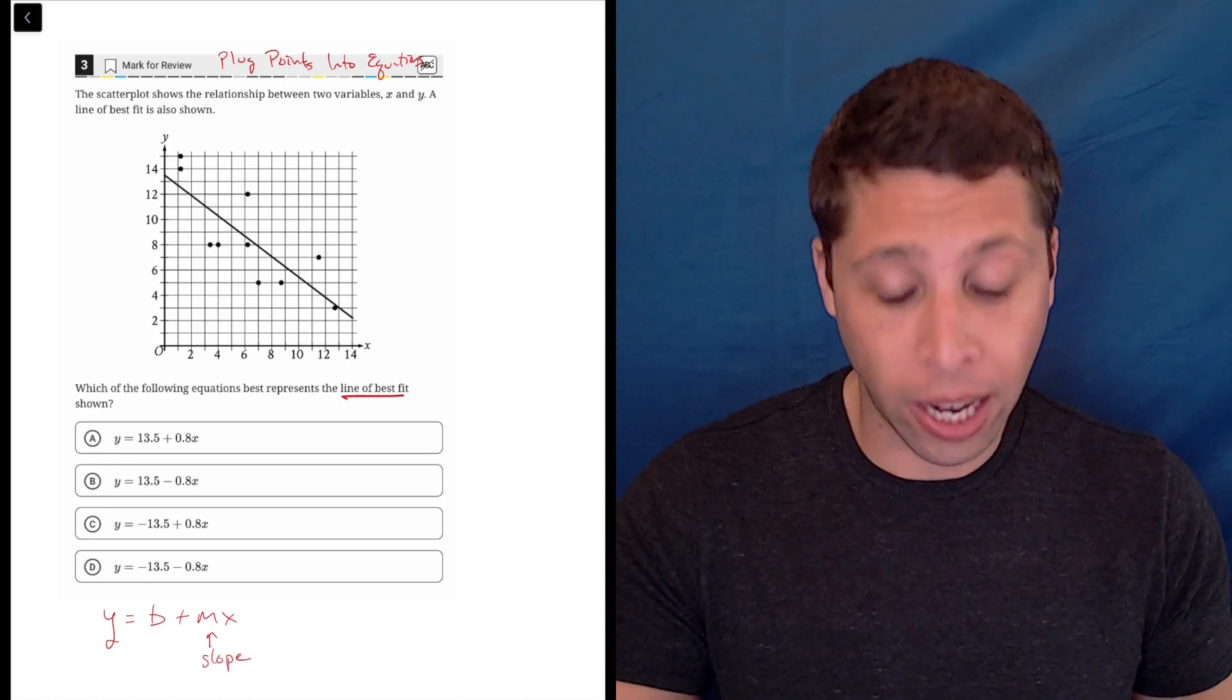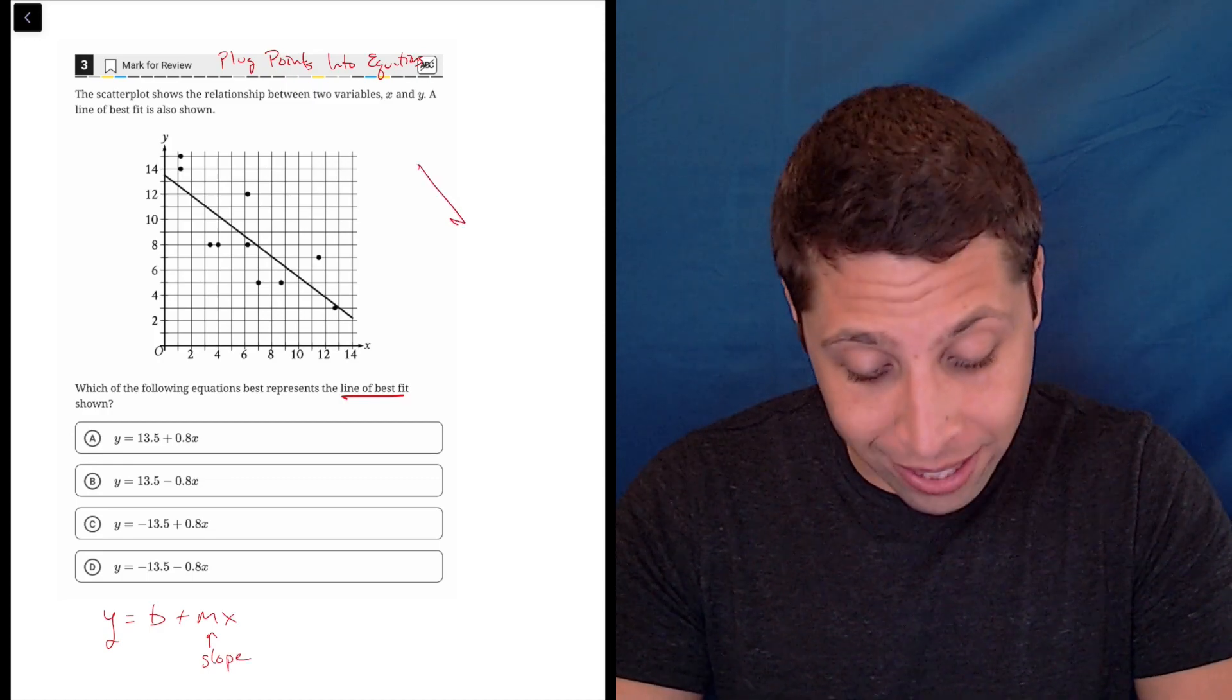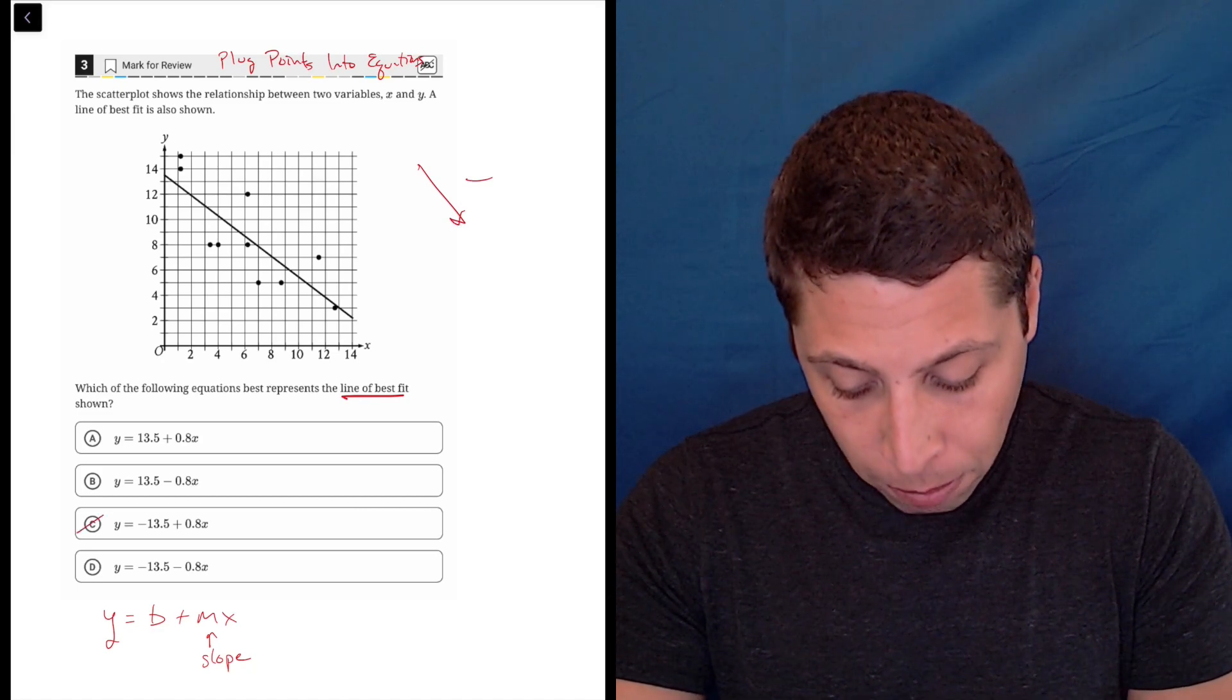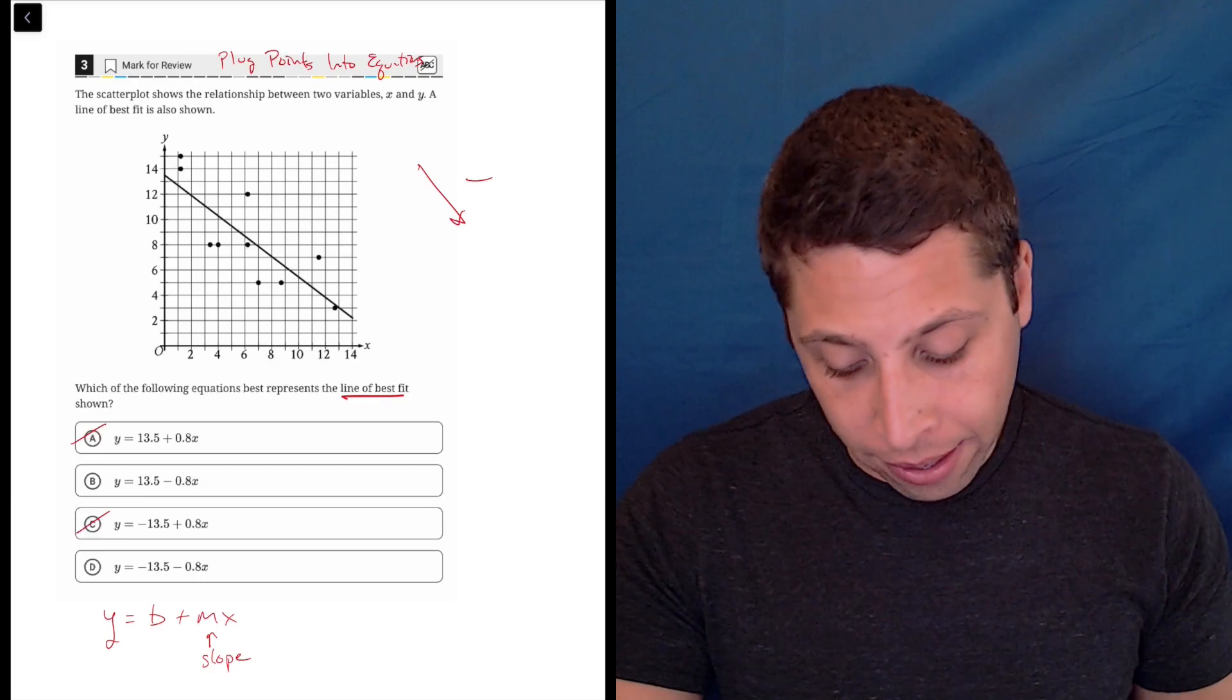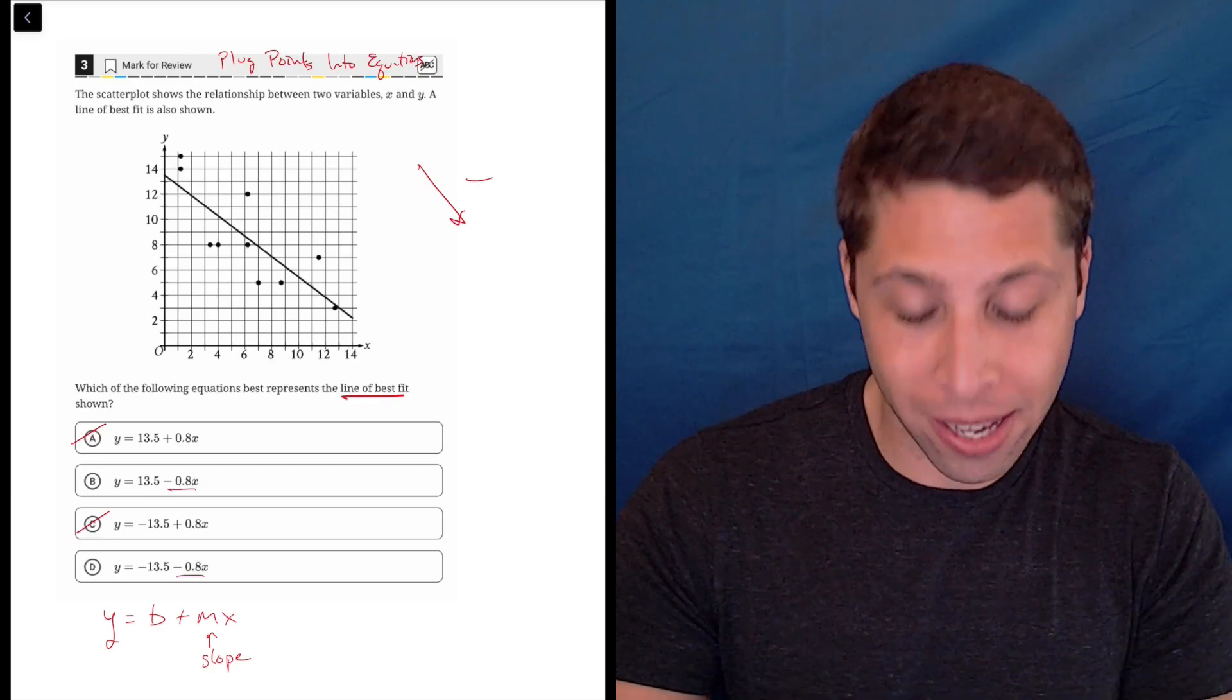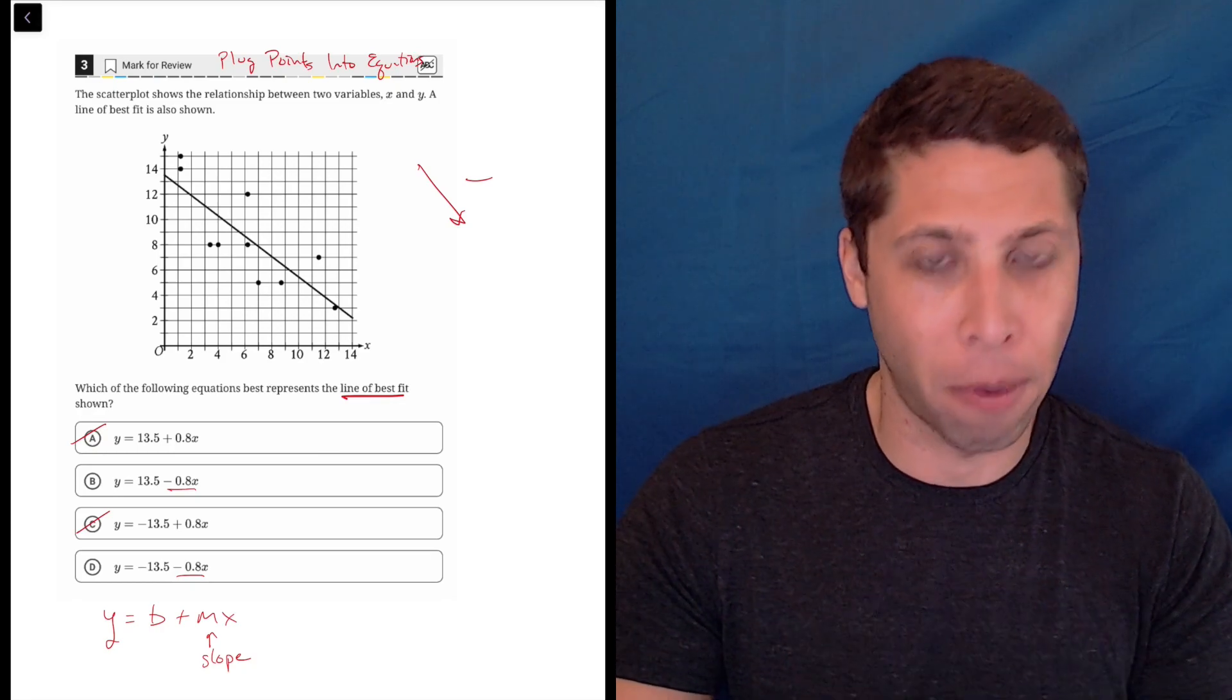And just looking at this line, I can tell that I have a negative slope, right? It's going down. That's negative. So the only ones that have negative slopes are going to be B and D, right? That negative 0.8. So I'm not actually going to need to calculate what the slope is. It's just very obvious that it's negative from the picture.